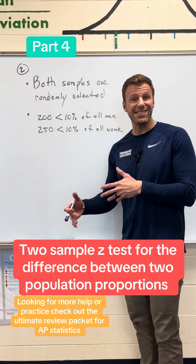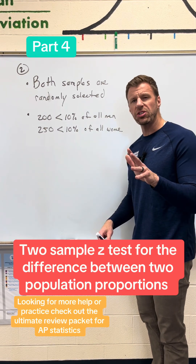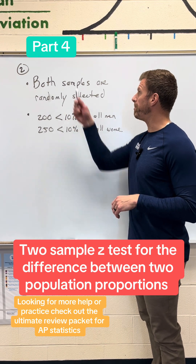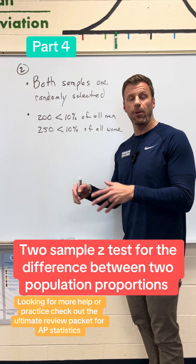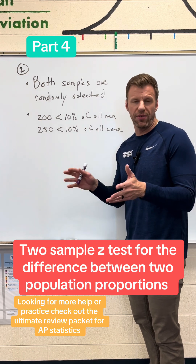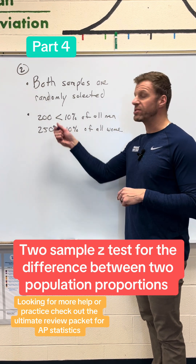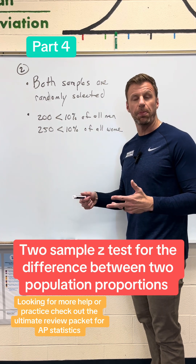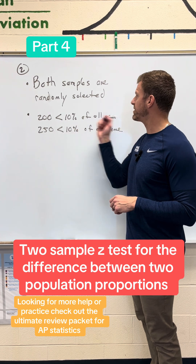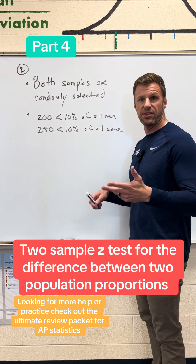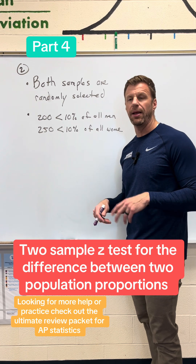The second step is to check the conditions necessary to conduct the test, which mostly should sound familiar. The first is that both samples must be randomly selected from their individual populations so we don't have any bias. Also, our samples must be under 10% of the populations from which they came — so we assume 200 men is less than 10% of all men in the city, and 250 women is less than 10% of all women in the city.